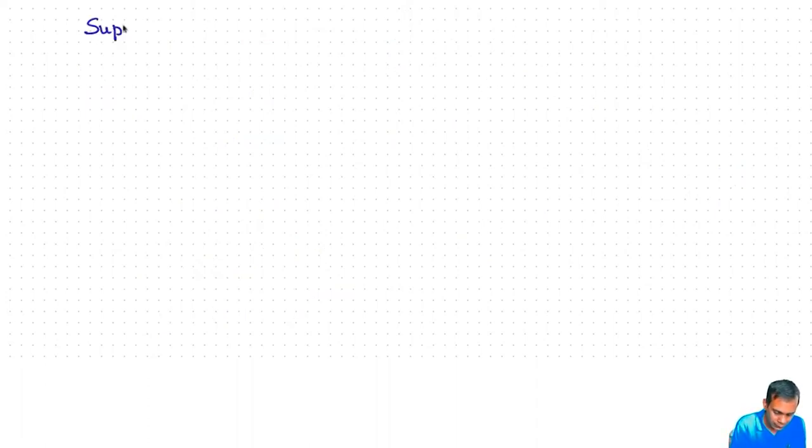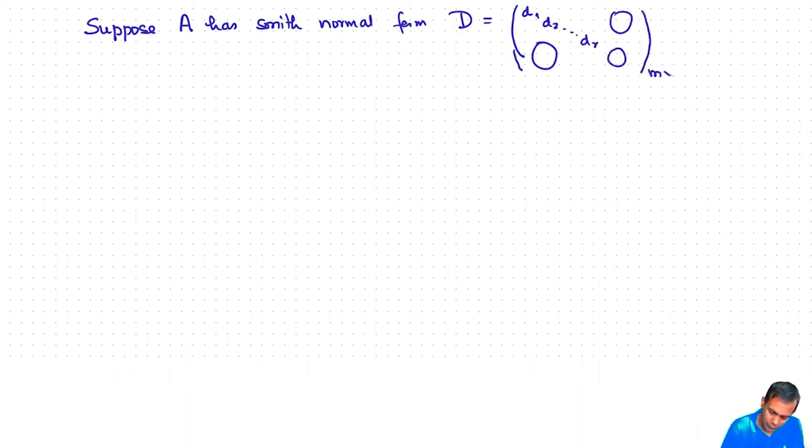So suppose A has Smith normal form. Let's call it D and that's d₁, d₂, ..., dᵣ, and then 0. Then what you get is that M is isomorphic to R^m mod column space of A, but A is equivalent to D. So M is isomorphic to R^m mod column space of D.